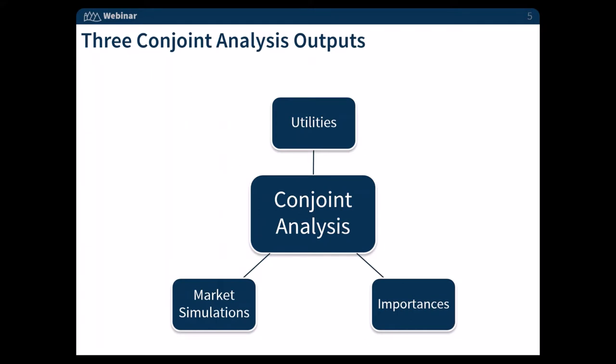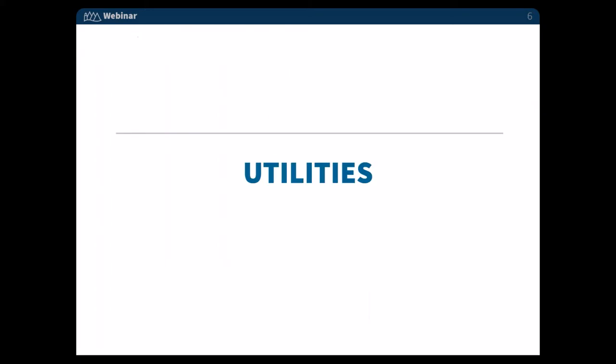Let's assume we fielded our study and got the right amount of completes for our design to be estimated efficiently. In Sawtooth software, when you run your analysis, you are going to get three different conjoint outputs. The primary one being our utilities. Whether you use logit estimation, latent class, or hierarchical Bayesian estimation will impact what those utilities actually look like. From there, you take your utilities and you can turn those into importance scores, and you can also turn those into a market simulator, which Keith and I both feel is the most important part of the output.